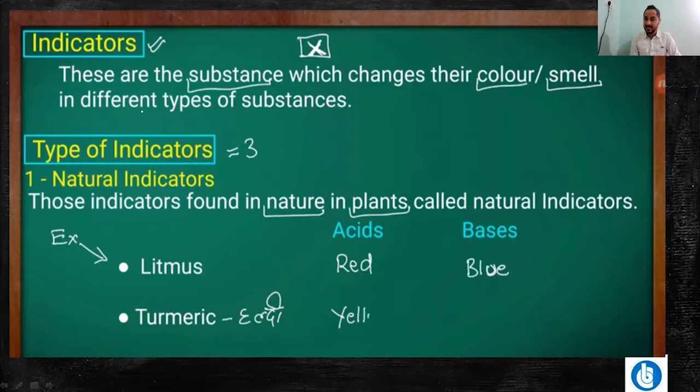Now, there are three types of indicators. Generally we talk about three types of indicators. First is the natural indicator. As the name suggests, it can be prepared naturally. There are many substances that are natural indicators, like litmus and turmeric.